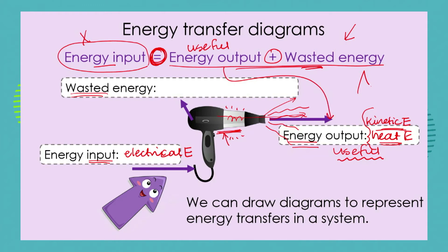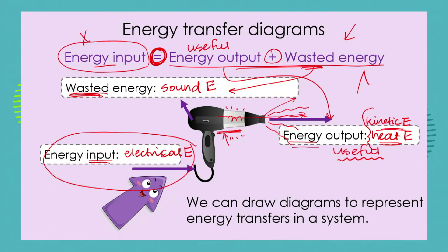No one can talk to you when you are drying your hair because of all the sound it makes. The sound energy is our wasted energy — it doesn't help us dry hair. So sound energy is our wasted energy. If we add up the useful energy output and the wasted sound energy, the total must equal the electrical energy input.